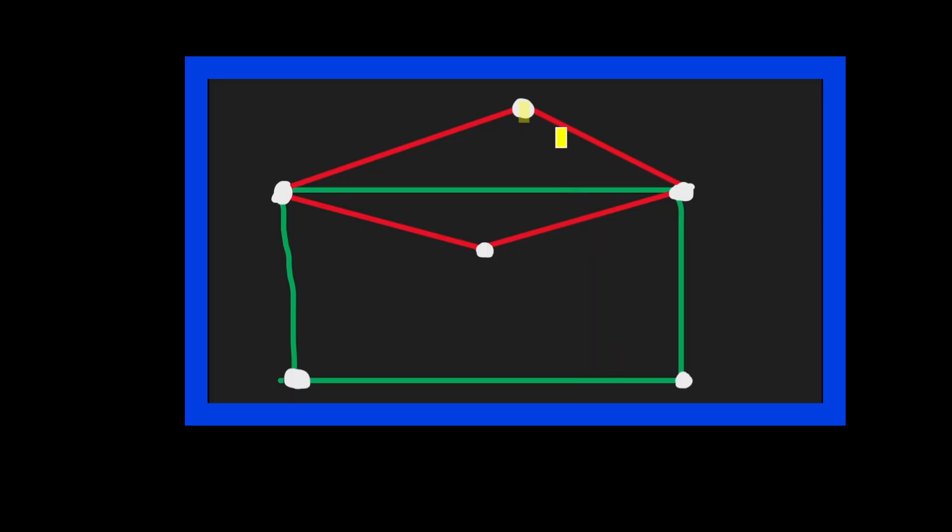We start at the start vertex, that's usually given. Let's just say that it's this vertex up there. Since we are on the red graph, we go through every edge on this red graph until we meet a point which is connected to another graph. If we haven't been on the other graph, which is the green graph in this case, we switch over to the green graph and continue on the green graph and go through every edge there.